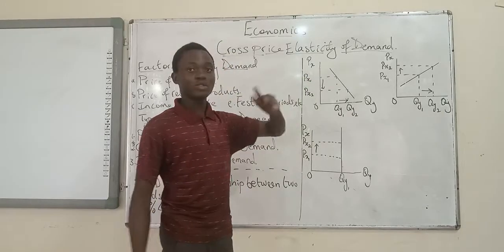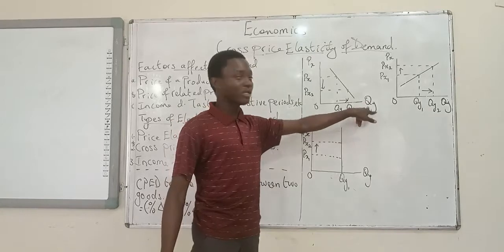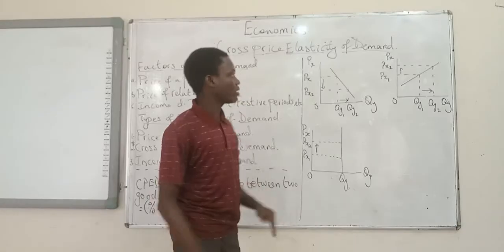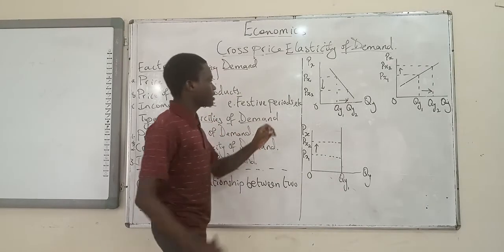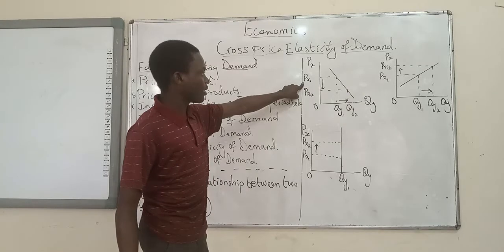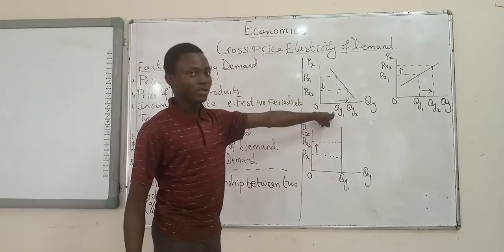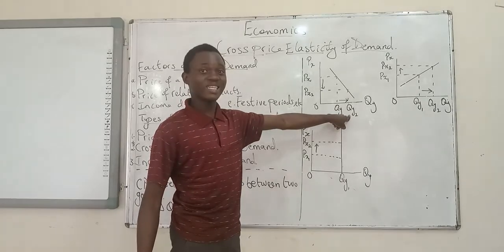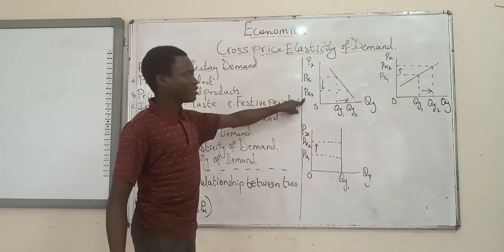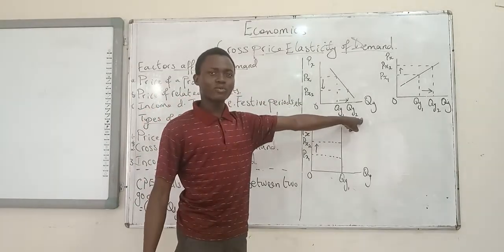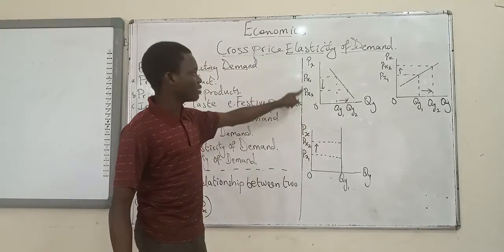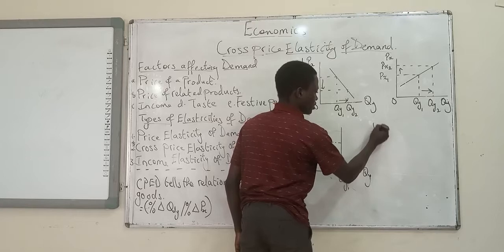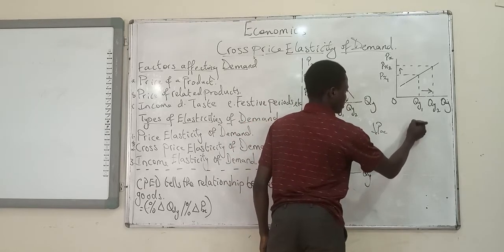This particular graph is talking about two different products — price of good X on one axis and quantity demanded of good Y on the other. When the price of good X was higher, the demand for good Y was at a certain level, and when the price of good X fell, the quantity demanded of good Y increased. So a reduction in the price of good X is leading to an increase in the demand for good Y. The price of good Y is constant — it wasn't the price of good Y that changed.